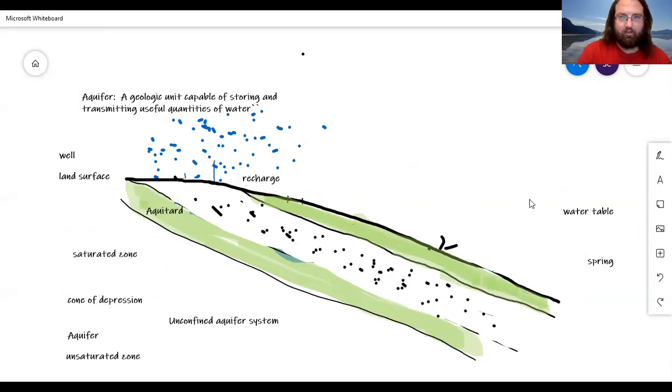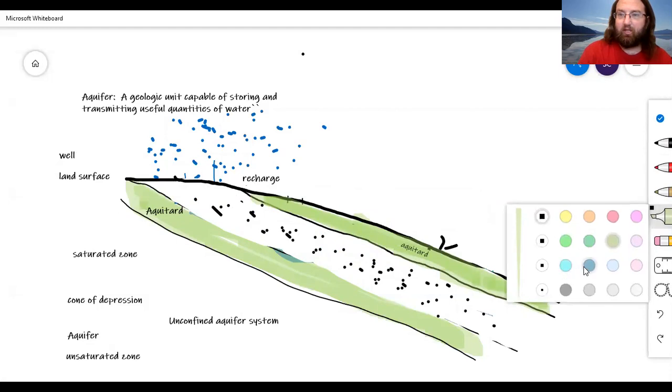And you're going to get a second aquatard on top of your system. So, you still have recharge going in here, and you're still even going to have a portion that behaves kind of like an unconfined system. You'll see a really well-defined area where there is an unsaturated zone and a direct connection to the surface.